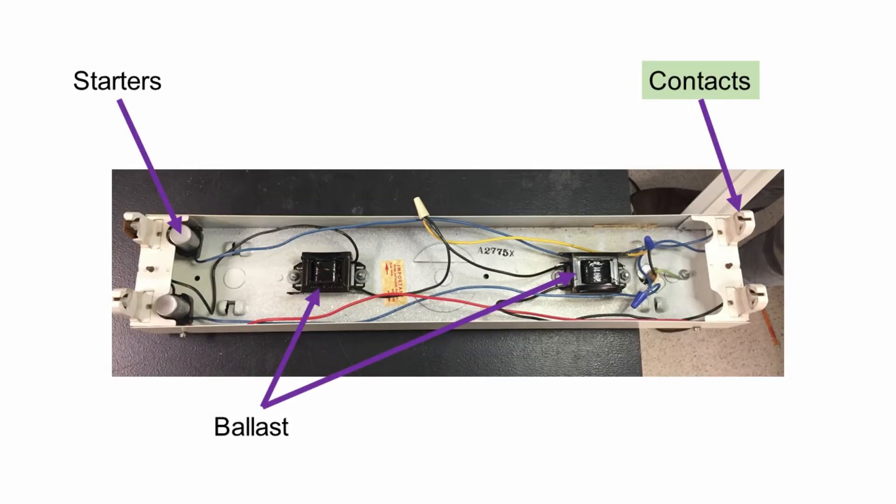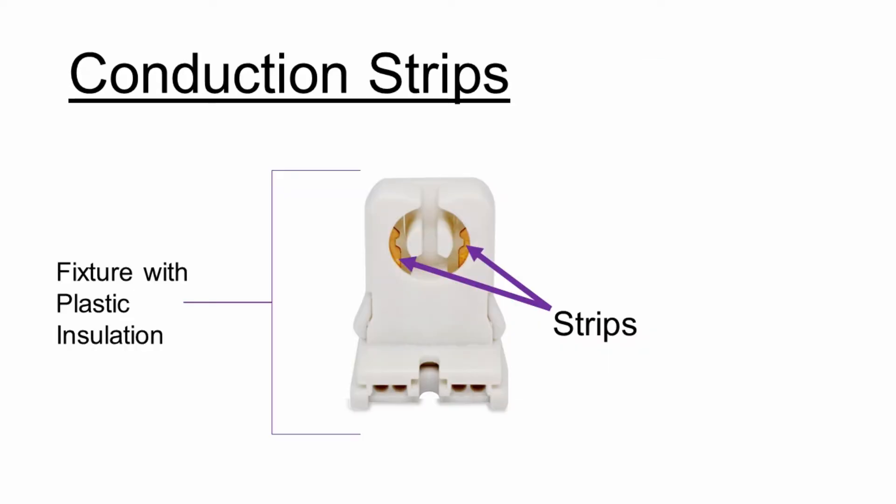Conduction strips provide points of electrical contact to connect the light bulbs to the rest of the circuit. These strips may be insulated with plastic to isolate the electrical contacts from the light casing.